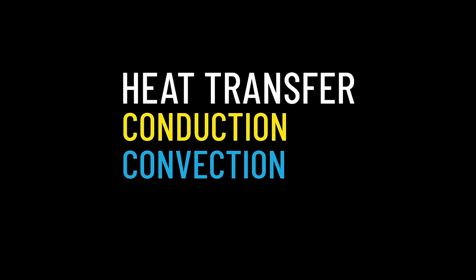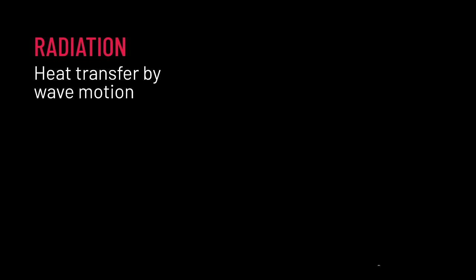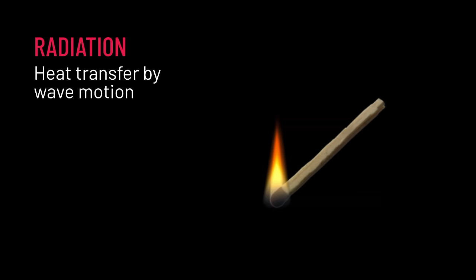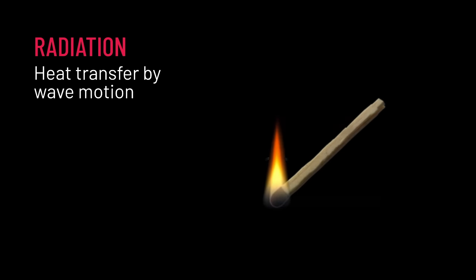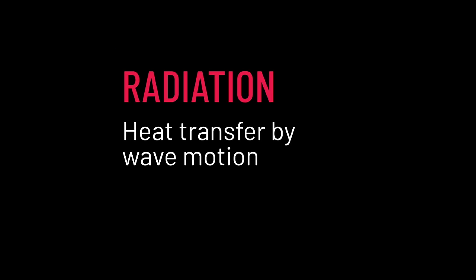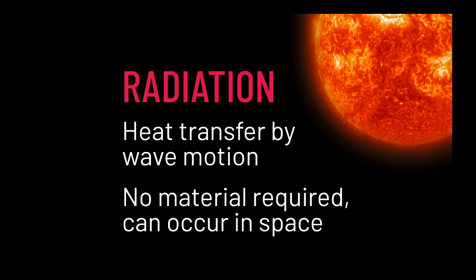Finally, let's think about radiation. Radiation is heat transfer by wave motion. Because of convection, heat is going to rise, but it's also going to travel outwards in the form of waves of energy — electromagnetic waves — and that's the third type of heat transfer. Radiation is really interesting in that it doesn't need a material for it to travel, so this can occur out in open, empty space. In fact, this is how energy travels from Earth's sun to the surface of the Earth.